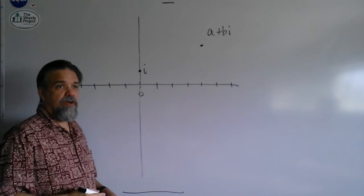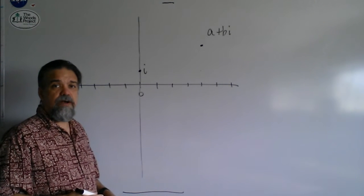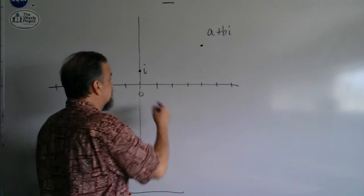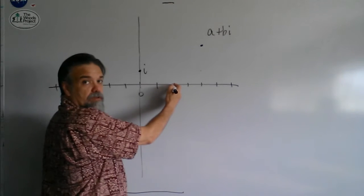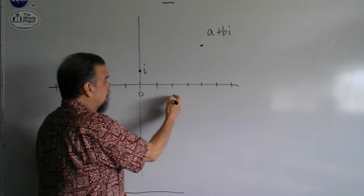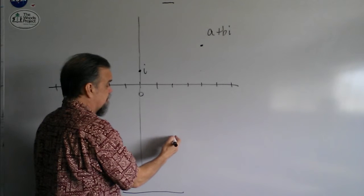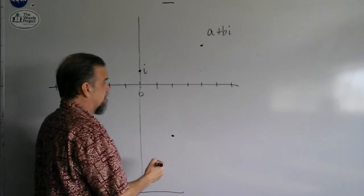If I wanted to find out where two minus five i was, then I would go one, two for the real part, and then one, two, three, four, five, and it would be right there.